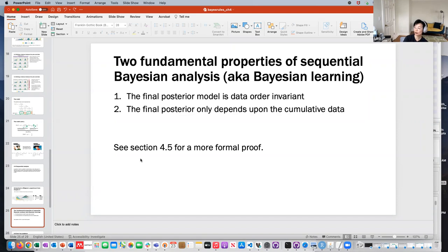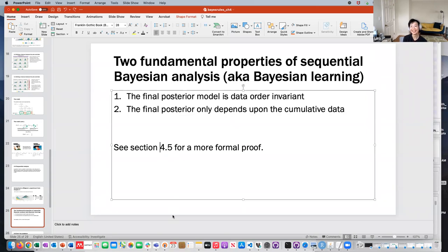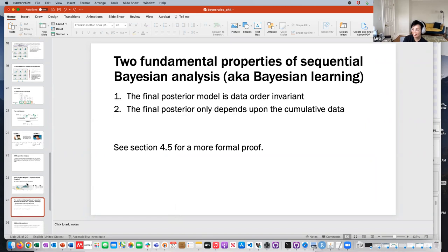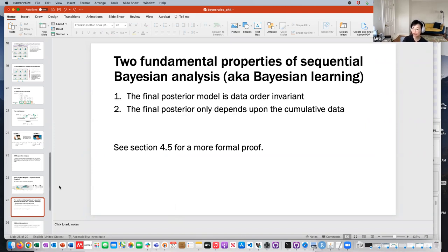And doing sequential Bayesian analysis, AKA Bayesian learning, it has two fundamental properties. The first is that the final posterior model is data order invariant. And what that means is if you've observed day two's data on day one and day one's data on day two, the posterior mean on day three will still be the same. And then second property is that the final posterior only depends upon the cumulative data. So I think this is if you sum it all together instead of doing it incrementally, you also get to the same posterior mean. And I got lazy at this point and didn't copy and paste more things. So in 4.5 you can go through the proof of checking that these two properties are true. But these two properties are very handy to have.